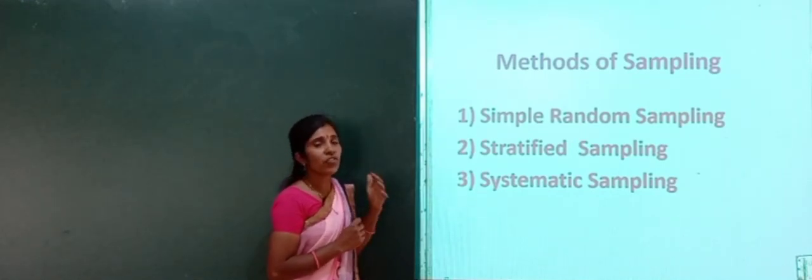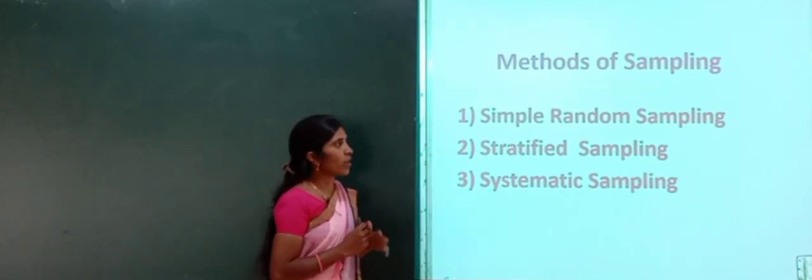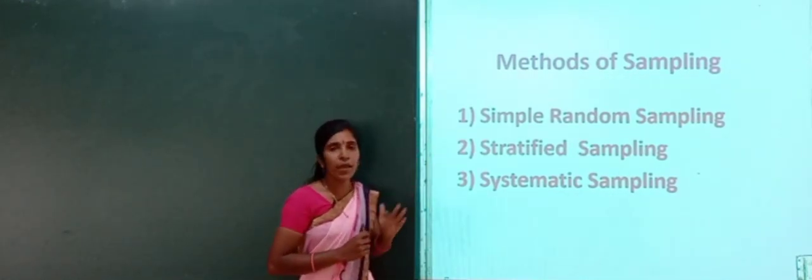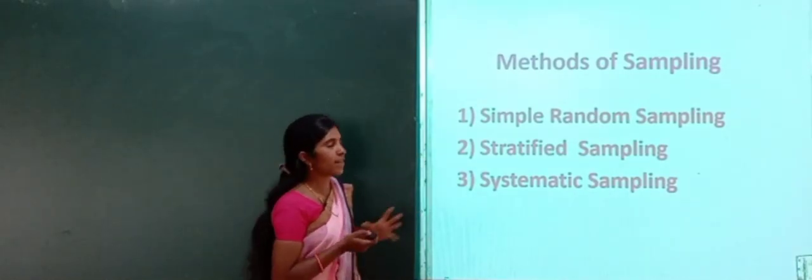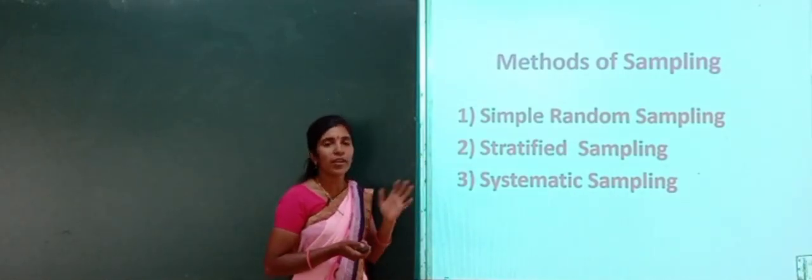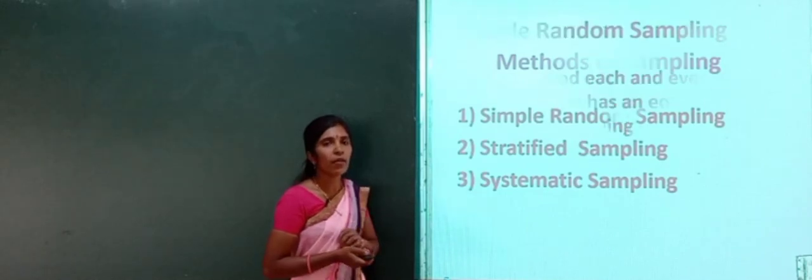Which are those methods? The first one is simple random sampling, the second one is stratified sampling, and the third one is systematic sampling. What do we mean by simple random, stratified, and systematic? Let us go through them one by one.